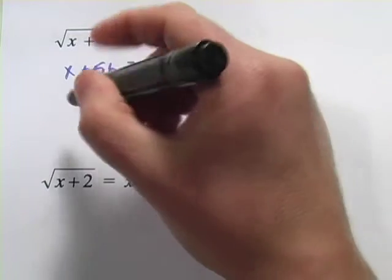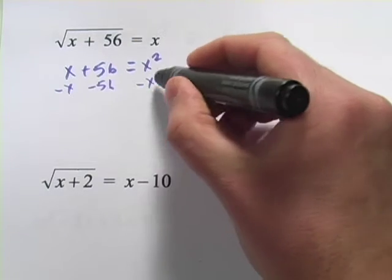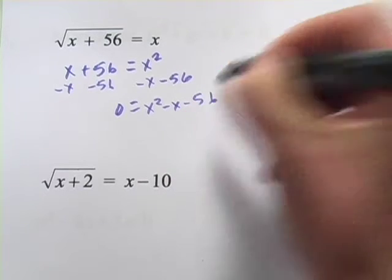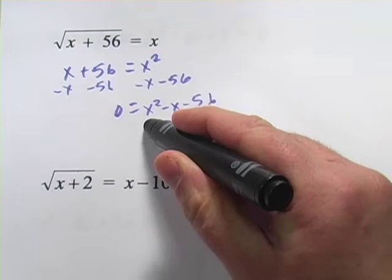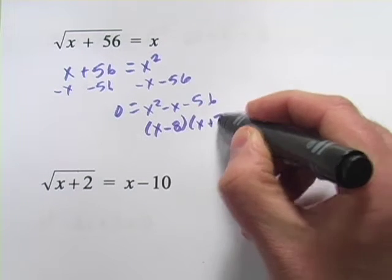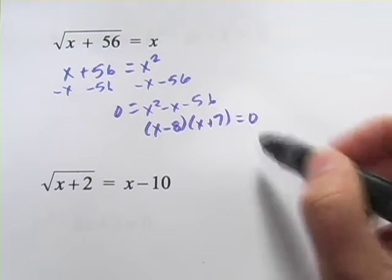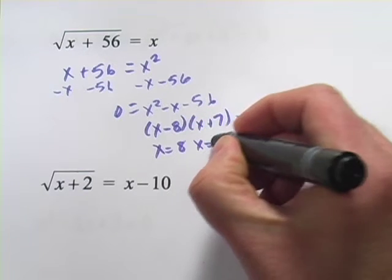Now we'll arrange this like a quadratic by subtracting x, subtracting 56 from both sides. And we get 0 equals x squared minus x minus 56. That, I think we can factor, that would be x minus 8 and x plus 7. And if we set each of those individual factors equal to 0 and solve for x, you're going to get x equals 8 and x equals negative 7.